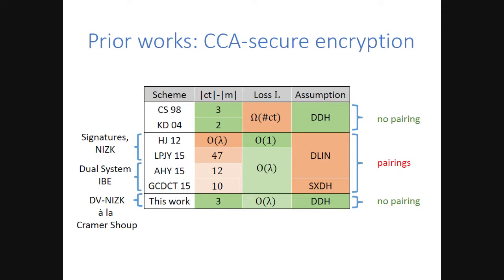Prior tight constructions use two different techniques. There is a group of constructions that use signatures and non-interactive zero-knowledge proofs, which are primitives that admit public verification and for which we don't know any efficient construction without pairing—so we cannot use this technique. Then there is a group of works that build identity-based encryption (IBE), which is stronger than CCA encryption. To build them, they use a methodology called dual-system encryption, introduced by Waters, which requires computational assumptions on both the ciphertext and the secret key space, and therefore also crucially needs a pairing—it's inherent to the construction. So we cannot use this technique either.